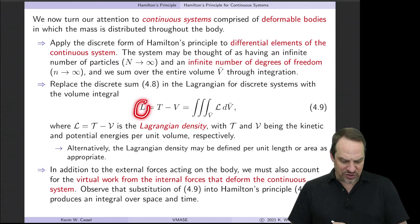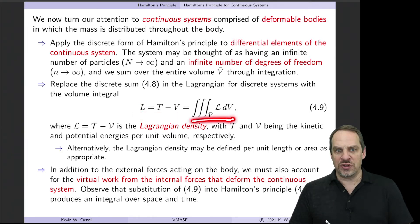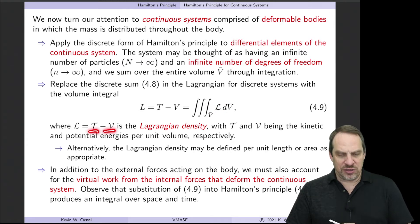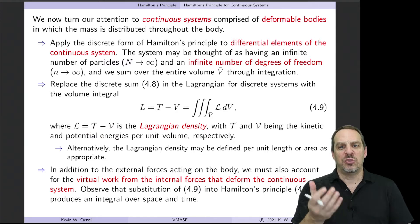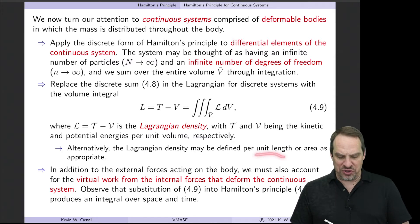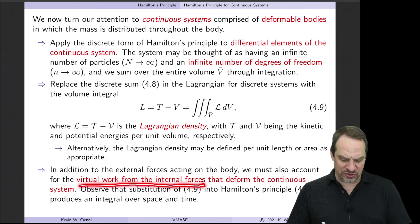So the way that looks is as follows. We have our Lagrangian, T minus V, just like before. But now that Lagrangian is going to be summed through integration, in this case through a volume integral. And this script L is a Lagrangian density. It's a Lagrangian per unit volume. This is comprised of a kinetic and potential energy portion, as before, but now per unit volume. So they're Lagrangian densities. Now in some cases, it may be per unit length or per unit area instead of per unit volume. But in any case, it's a density. But because continuous systems are deformable, not only do we need to account for the effect of forces acting external to the system, on the system, we also have to consider the virtual work done by internal forces that deform the system as well. So you'll see how that comes in.